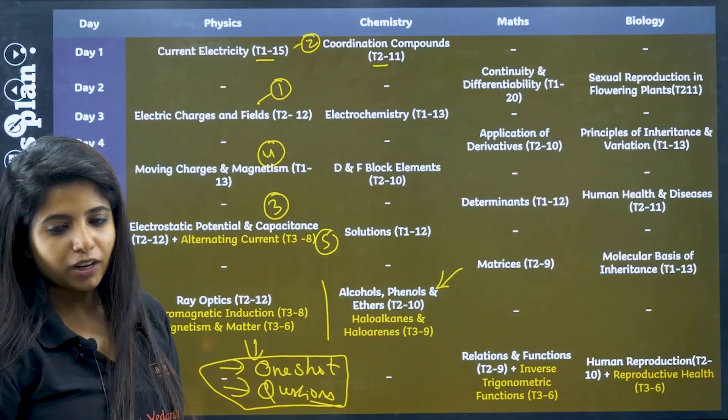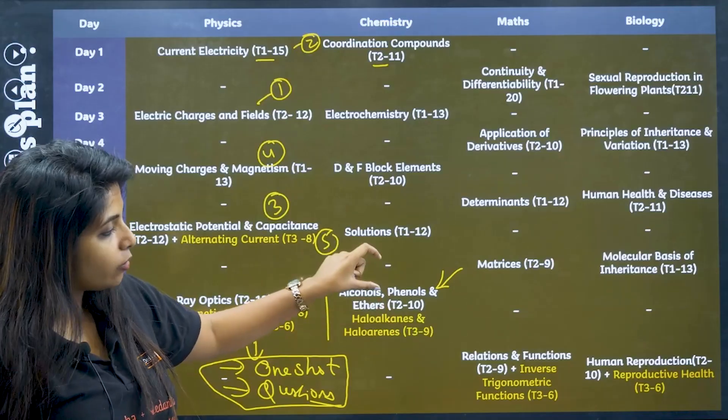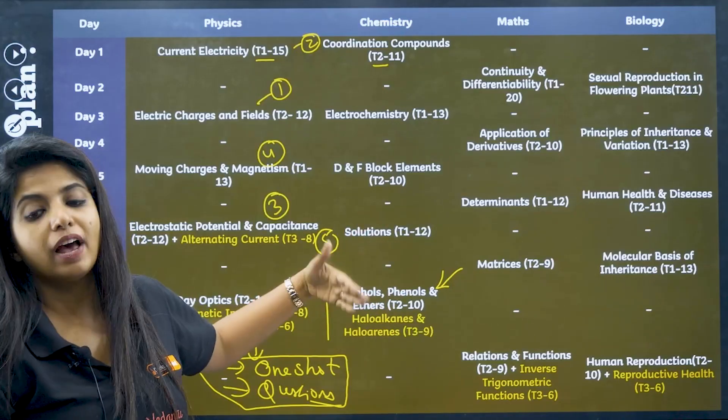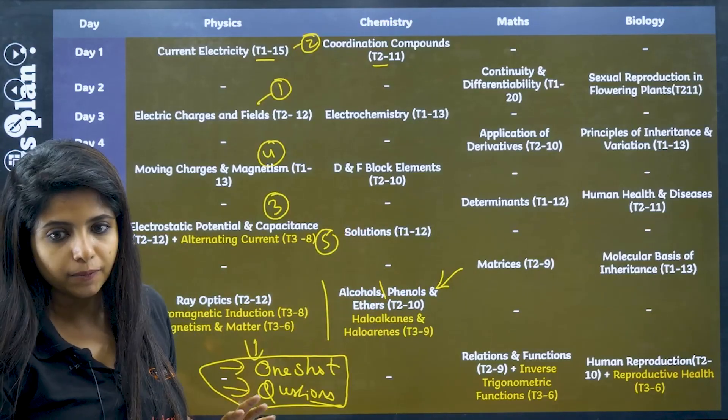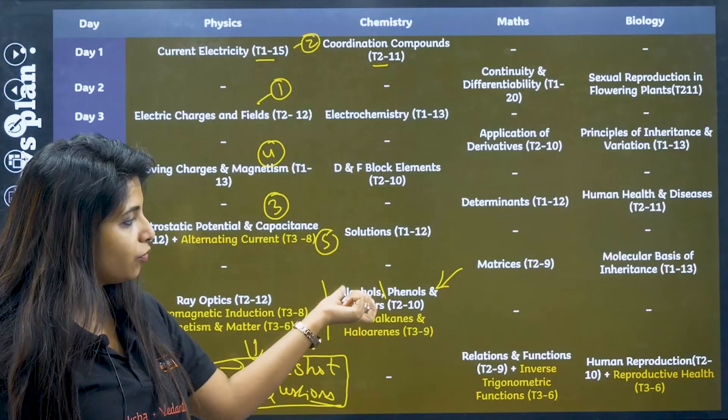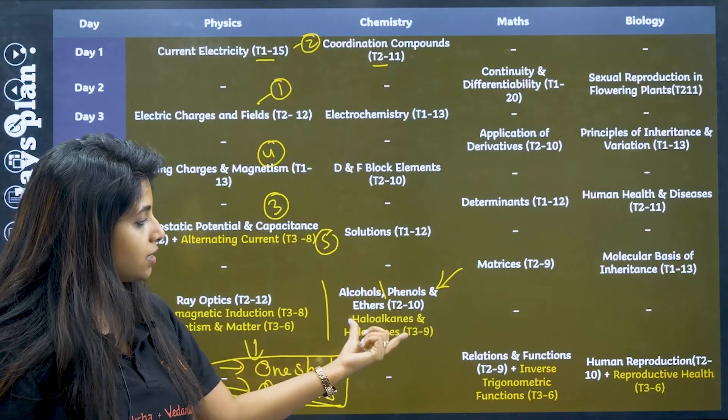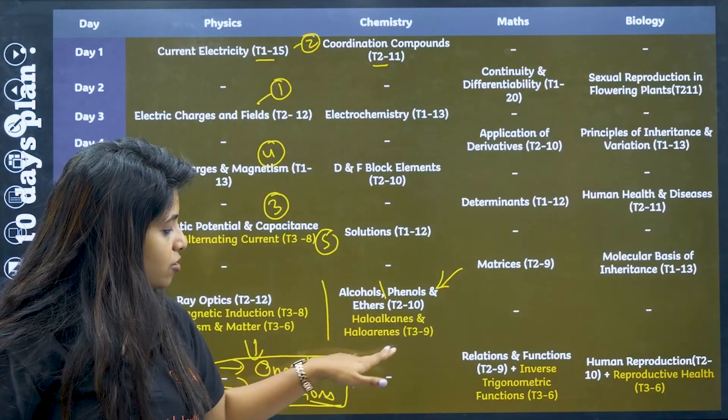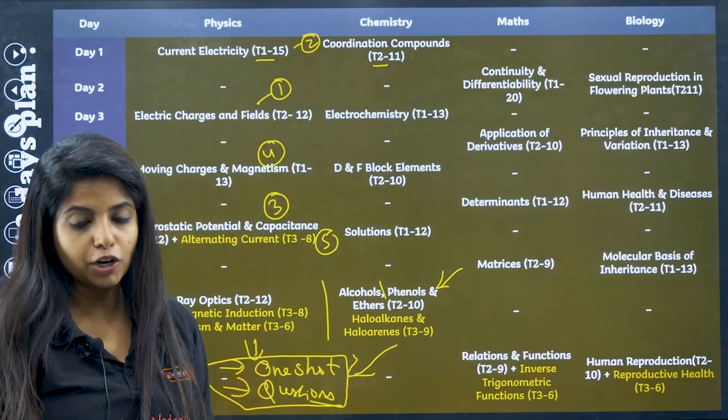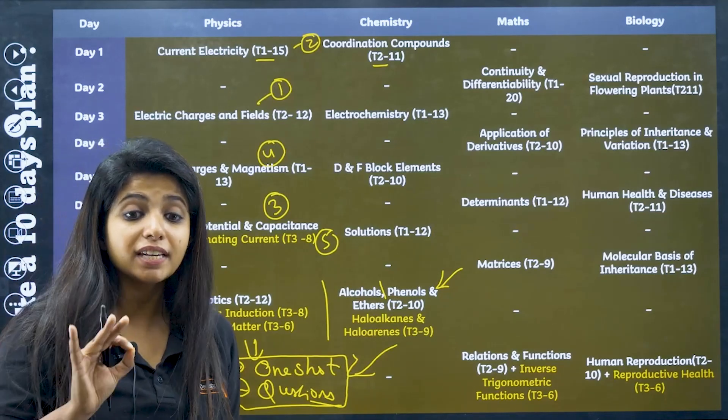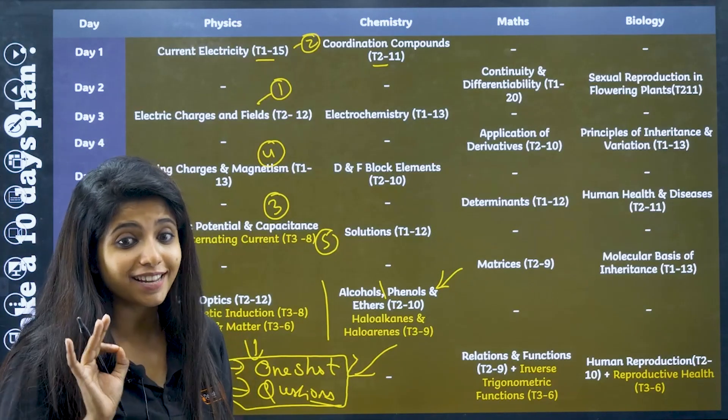If only one is coming, then you can pick - if haloalkanes are coming, then pick that chapter. If alcohols are coming, then pick that particular chapter. If both of them are coming, then as I said, prioritize this. The second priority goes to this. Again, one-shot videos and question practice. That should be done.